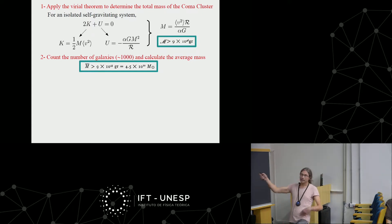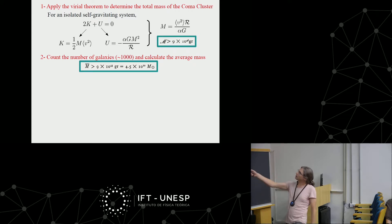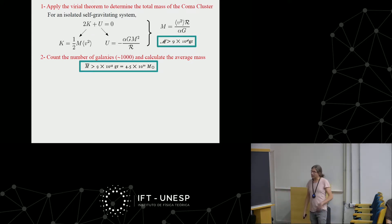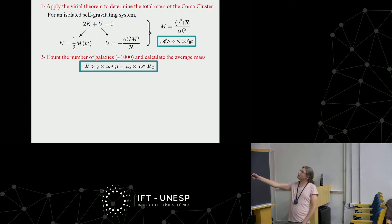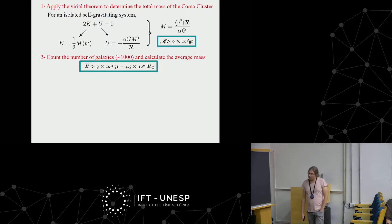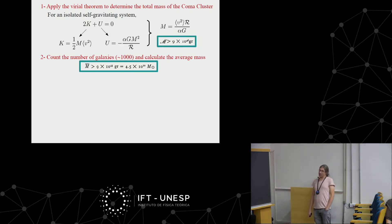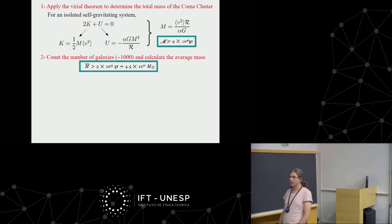The mass depends on the size measurable with your telescope, on Newton's constant, on the numerical parameter 5/3, and on the average velocities of the members of the Coma cluster determined from observations. He found the mass of the Coma cluster to be larger than 9×10^46 grams. He then counted about 1,000 galaxies and calculated the average mass of each: 4.5×10^10 solar masses.